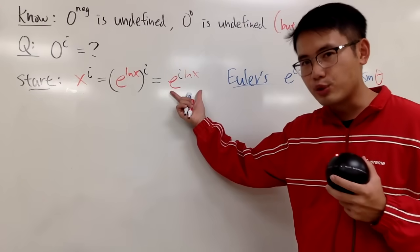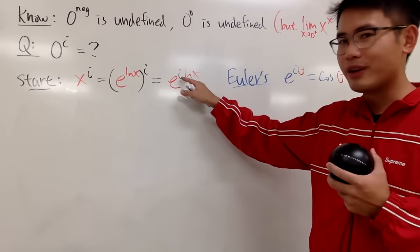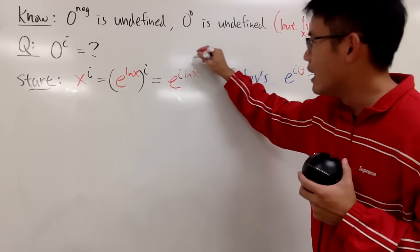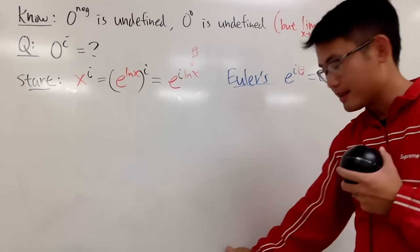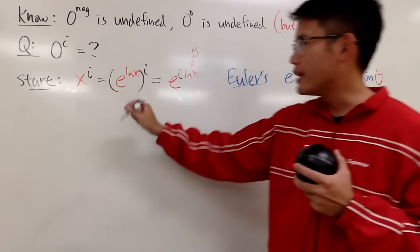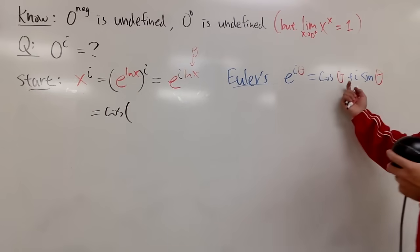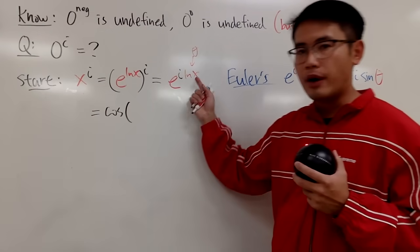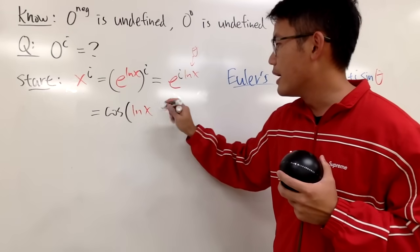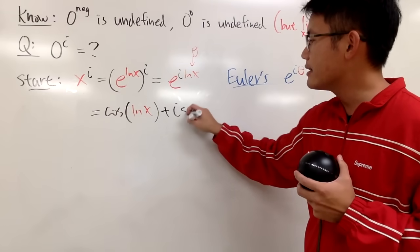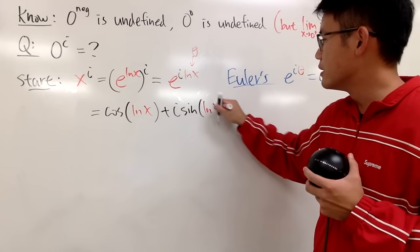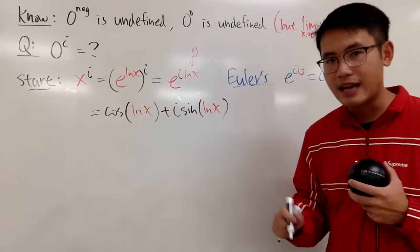Well, in our situation here, we have the i here already, so of course, this has to be our theta. So, I can write this down now as the following. This is the same as saying, cosine of theta, which is our ln of x in this situation, and then we have to add i times sine of theta, which is ln(x), like that.